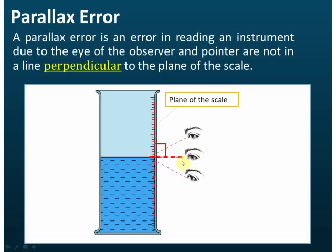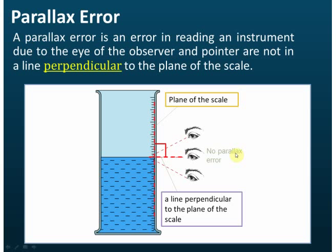Now if this is the case, if you read it from here, then the line is perpendicular to the plane of the scale and there's no parallax error.